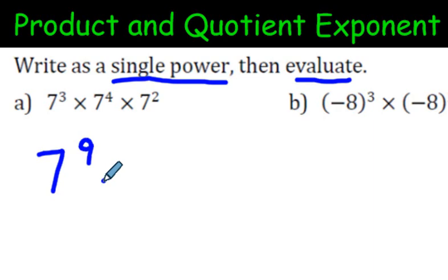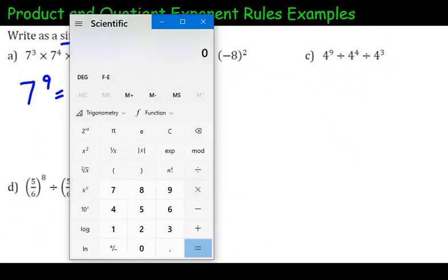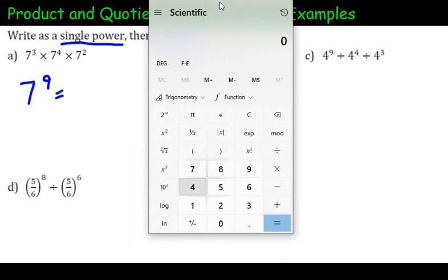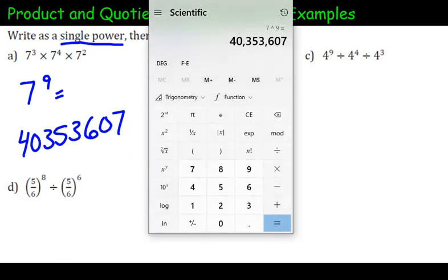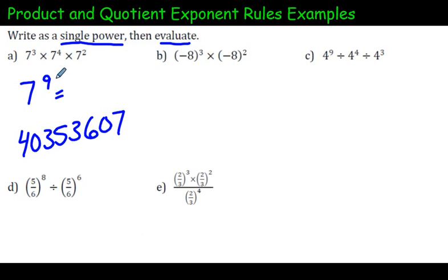Now it does say to evaluate. If you had to evaluate, you're actually just going to say what's 7 to the power of 9. I'm just going to quickly get that. It's a crazy big number, 40353607. But the important part is really expressing it as a single power. This part here is just whether or not you can type something in the calculator properly.